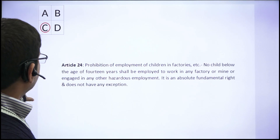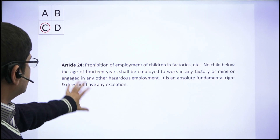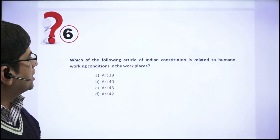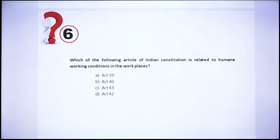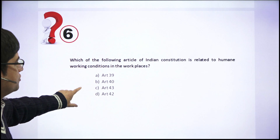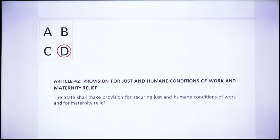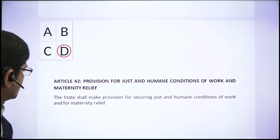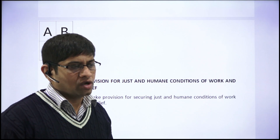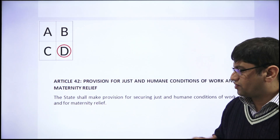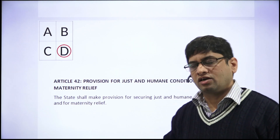So the answer is only the first statement is correct — Article 24 is the prohibition of employment of children in factories. Moving to Article 42 of the Indian Constitution, which is related to human working conditions in the workplace: Article 42 provides for just and humane conditions of work and is also related to maternity relief, where the state makes provision to secure just and humane working conditions and provide maternity leave.